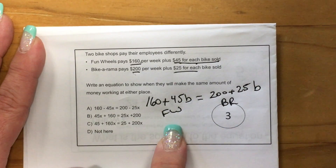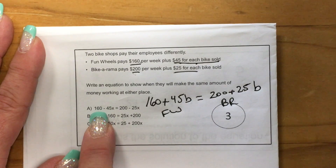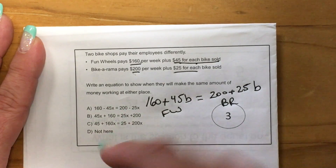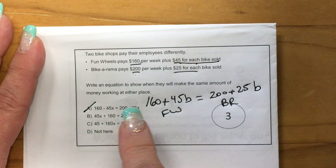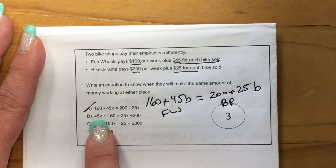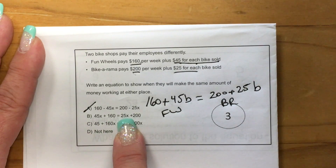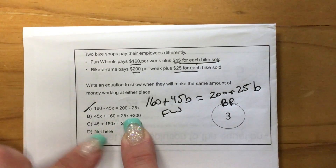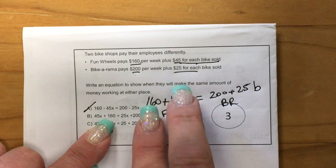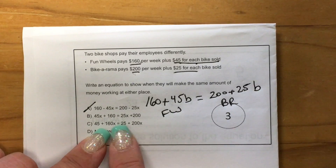So Bike-O-Rama and Fun Wheels — I just need to match this up. We're not going to subtract because we want to add when we're making money, and this says to plus. So we have $45x plus $160 equals $25x plus $200. This is the same thing as what I wrote, except they've reversed the two terms around on each side. So B looks good.